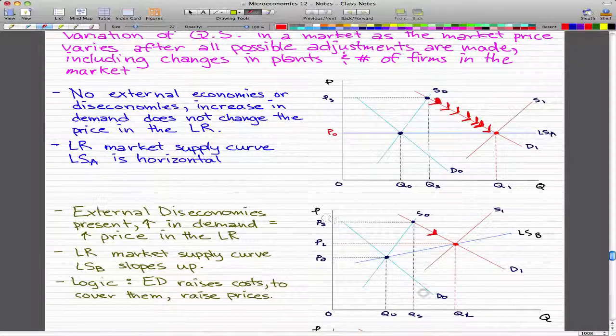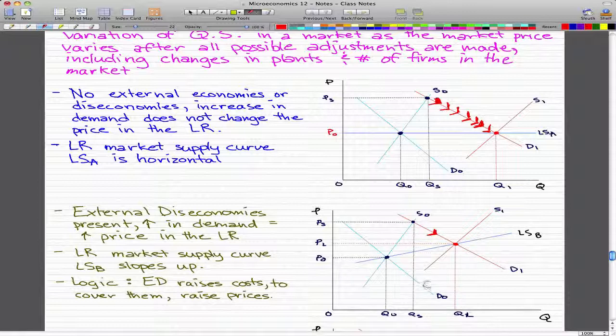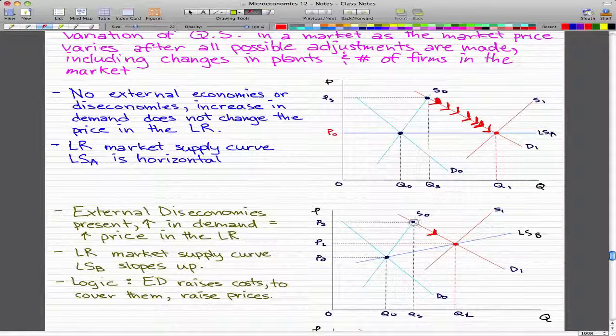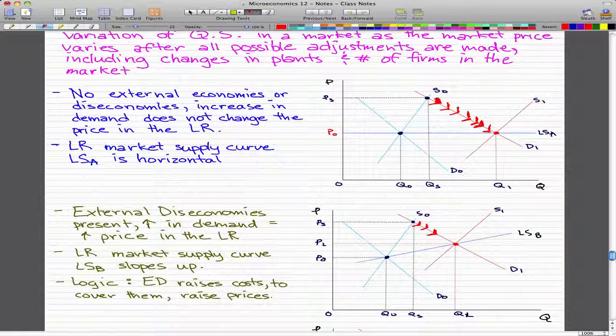Here's our original demand. We shift our demand curve to D1 rightwards. This is what happened immediately, our new immediate equilibrium point. But due to diseconomies, the price goes down to P2. So, the price originally rose to P3, but it ultimately in the long run fell back to P2. But overall in the long run, the increase in demand did cause an increase in price.